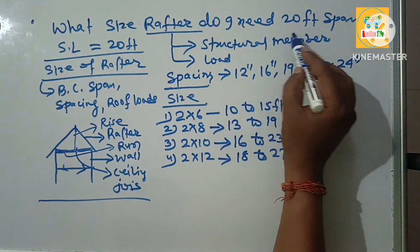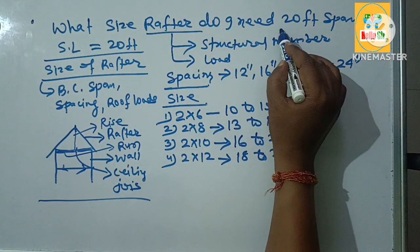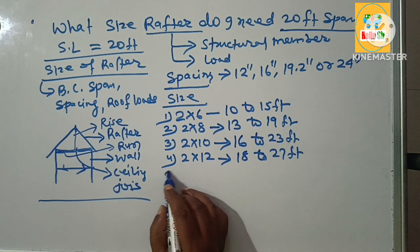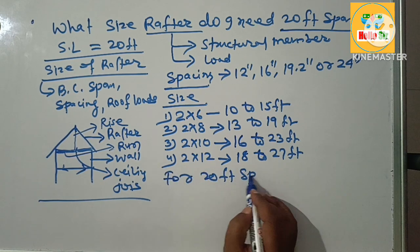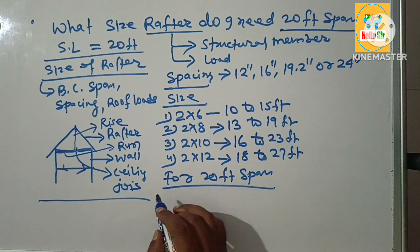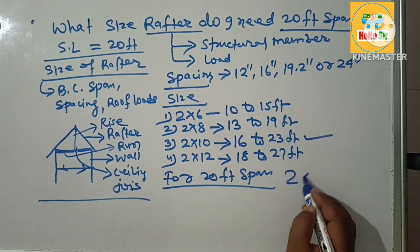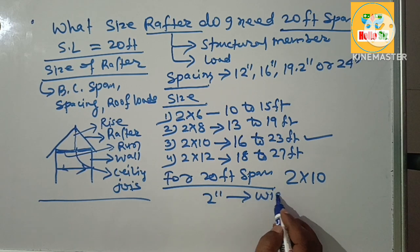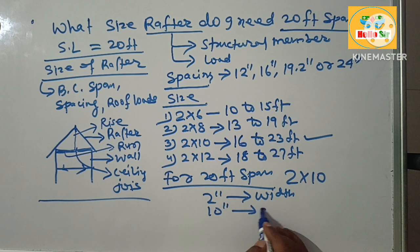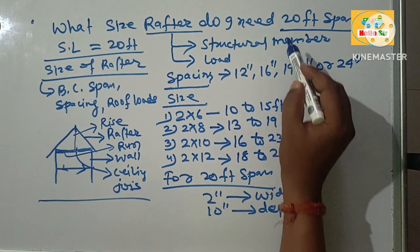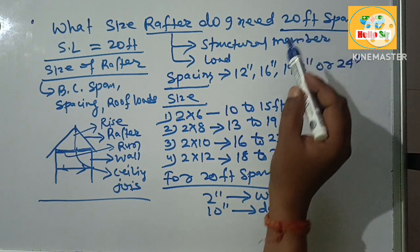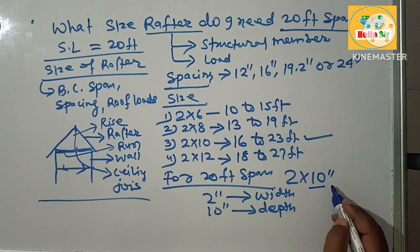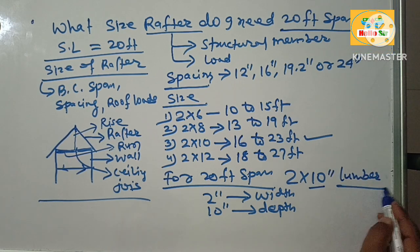The question asked here is what is the correct rafter size for 20 foot span? For 20 foot span you can use 2 by 10 rafter. Here is the 2 inch width and 10 inch depth. So for the span length of 20 foot, you can use the size 10 inch depth of lumber.